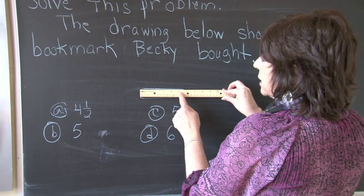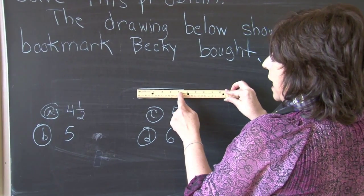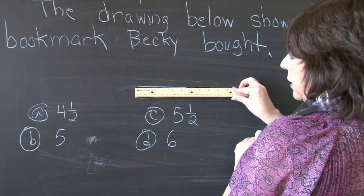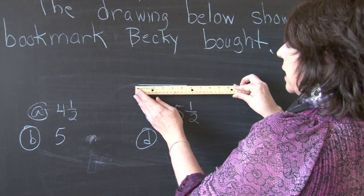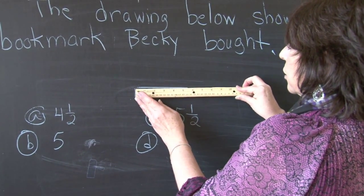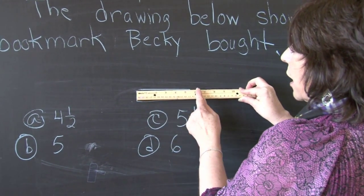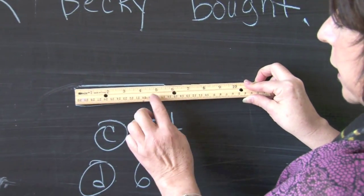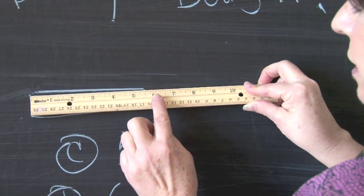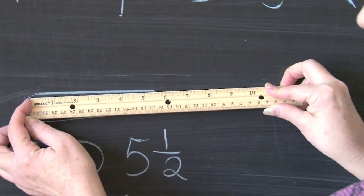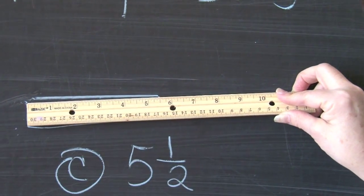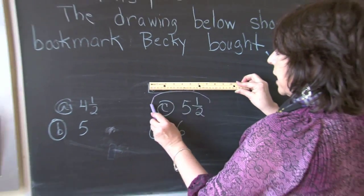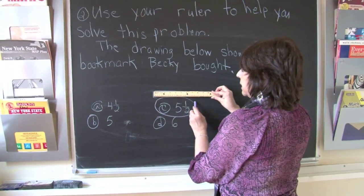Is it five? It is not exactly five because there is still a line. Let's look at D. Is it six? No, this line does not come up to six. It is between five and six because I began at zero. So the correct answer is five and a half. C.